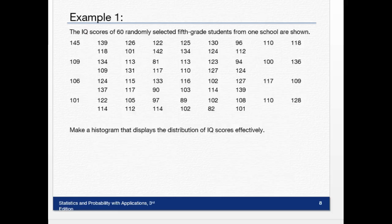All right. The IQ scores of 60 randomly selected fifth grade students from one school are shown. Make a histogram that displays the distribution of IQ scores effectively. So we're going to walk through this. First thing I would recommend you do is find the highest and the lowest piece of data. So let's skim this really quick.